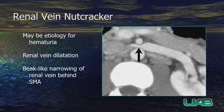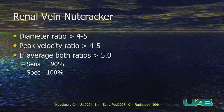Renal vein nutcracker may be the etiology for hematuria in some patients. You look for renal vein dilatation — I tend to notice this more on CT studies than on ultrasound. It's going to be a beak-like narrowing. If you get just mild smooth tapering of the renal vein, that's not what you're looking for — it needs to be a fairly beak-like pinching off of the vein. On CT, you might also see thrombus, or even on ultrasound, thrombus in the vein, or delayed enhancement of the left kidney versus the right.